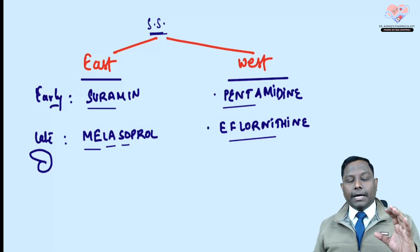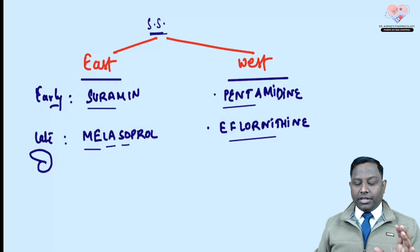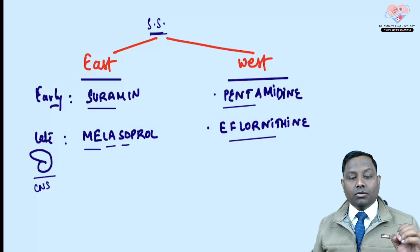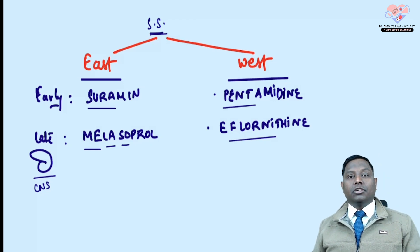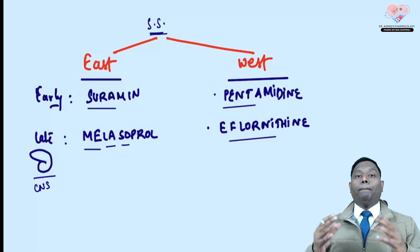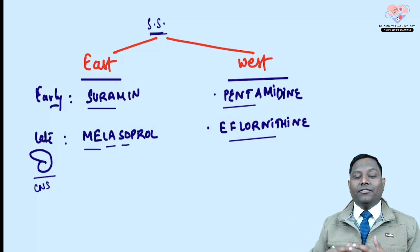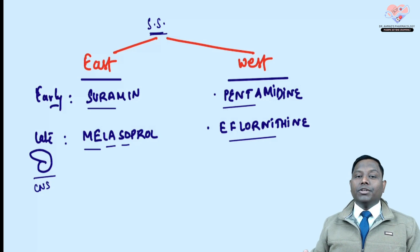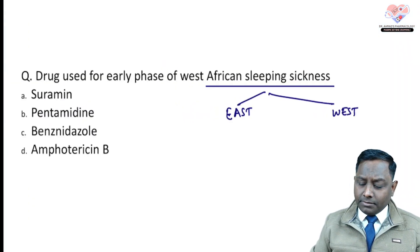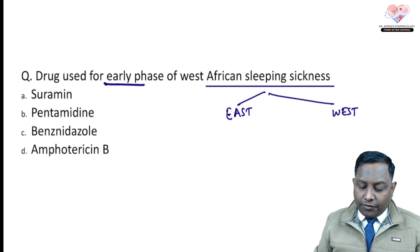When you ask 'until when will you sleep?' he says 'main late tak soya' (I slept till late) — so Melarsoprol is the drug of choice in the late phase (CNS involvement) of East African sleeping sickness. For West African, since they are the best Africans who copy Western culture and live in a penthouse, Pentamidine — which has a nice floor — is the drug for the early phase of West African sleeping sickness.